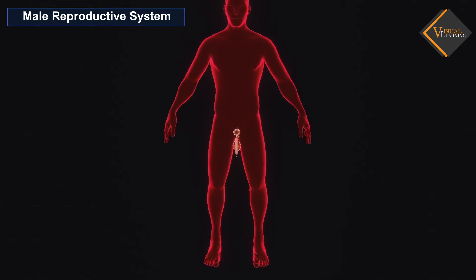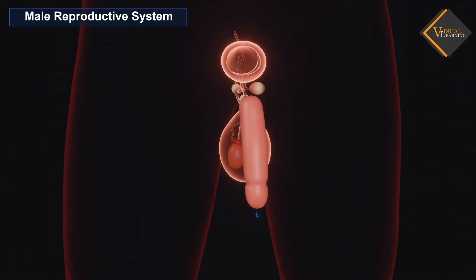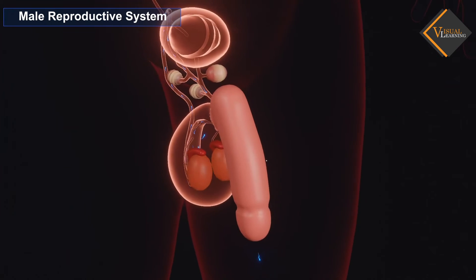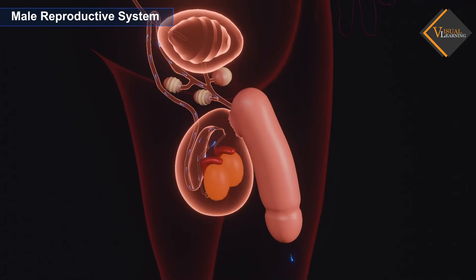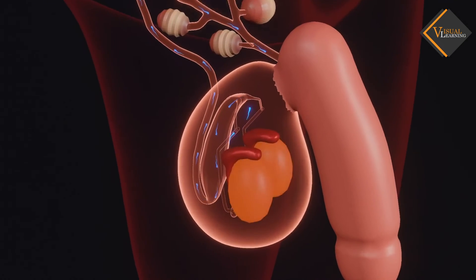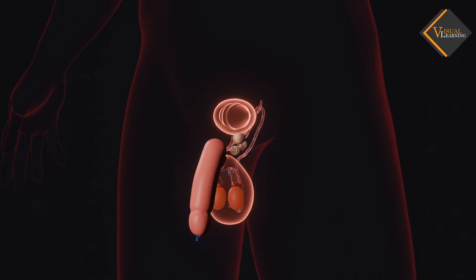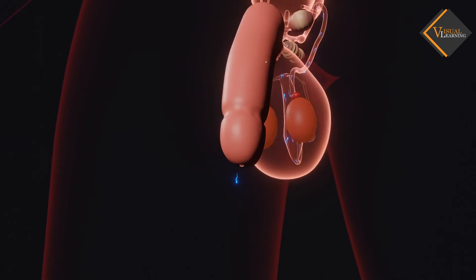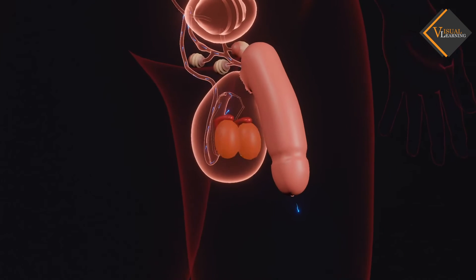The male reproductive system consists of portions which produce the germ cells and other portions that deliver the germ cells to the site of fertilization. The formation of germ cells or sperms takes place in the testes. These are located outside the abdominal cavity in the scrotum because sperm formation requires a lower temperature than the normal body temperature.